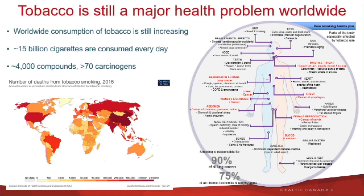It's estimated that tobacco smoking is responsible for at least 90% of all lung cancers and for 75% of all chronic bronchitis and emphysemas. What we're going to focus on today is the evidence that we have on the impact of tobacco smoking on reproduction.